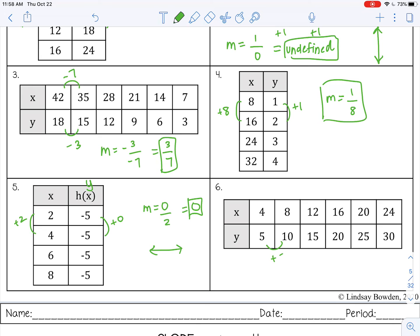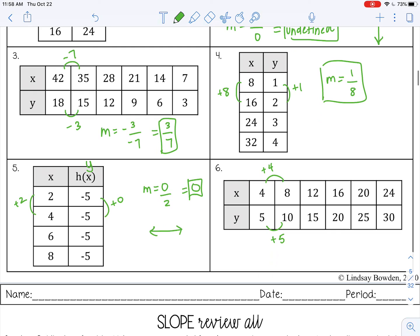And then number six, plus five, plus four, so positive five over four. I can't reduce that. I'm going to leave it as an improper fraction. That's my final answer.